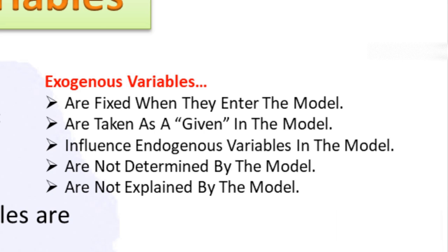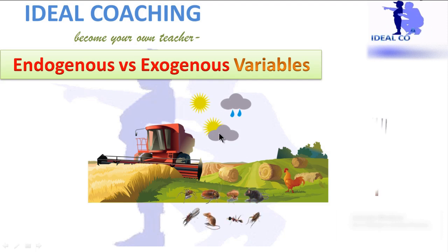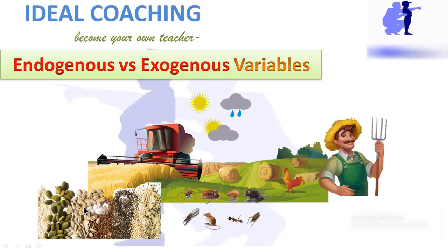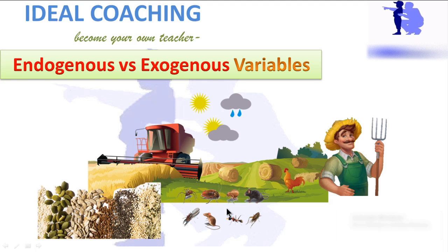Take one more example: if we consider a farm producing some kind of food, its output will be dependent on weather, pests, skills of the farmer, and seed quality. All these things are exogenous to the farm. Pests are also affected by weather, so weather is purely exogenous, and pests are not purely exogenous — they are endogenous for weather and exogenous for the farm.